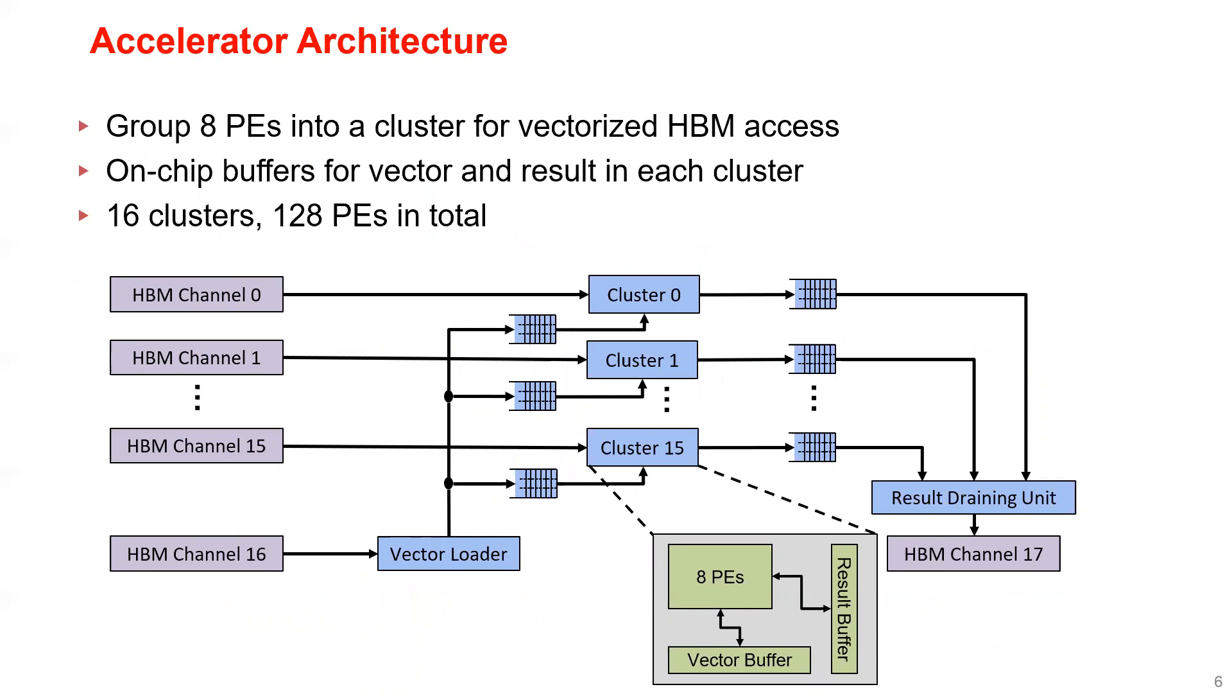Inside each cluster, we have on-chip buffers for the input vector and the result vector to reduce off-chip memory traffic. We also have a vector loader to load and feed the vector to the clusters, and a result draining unit to write the results back to HBM. There are 16 clusters in our system, so we have 128 PEs in total.